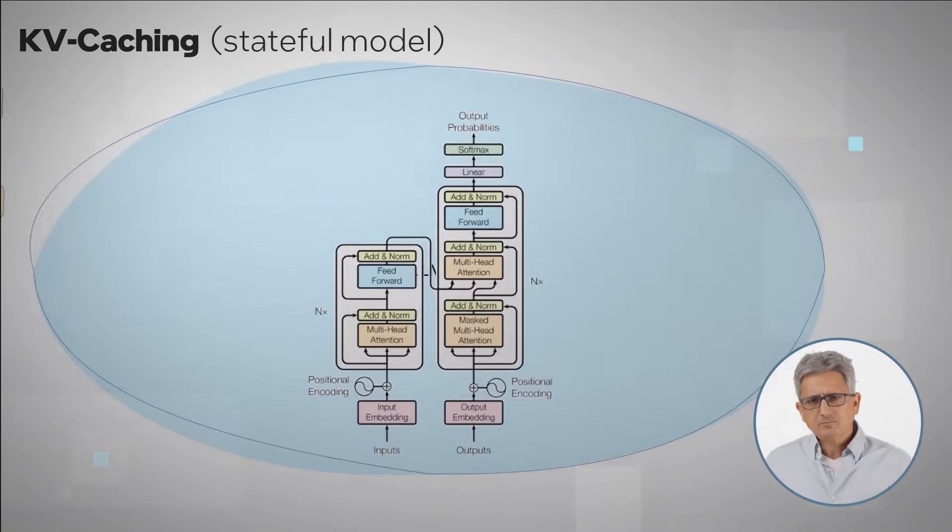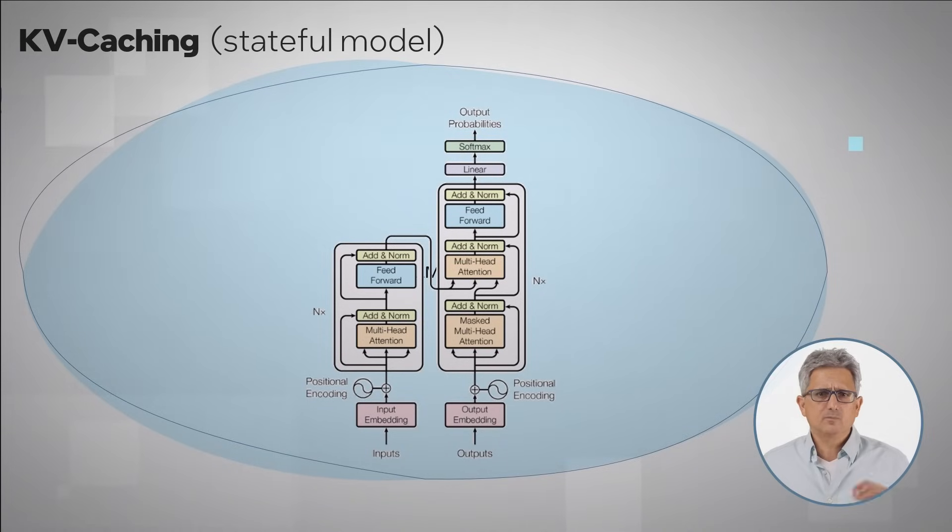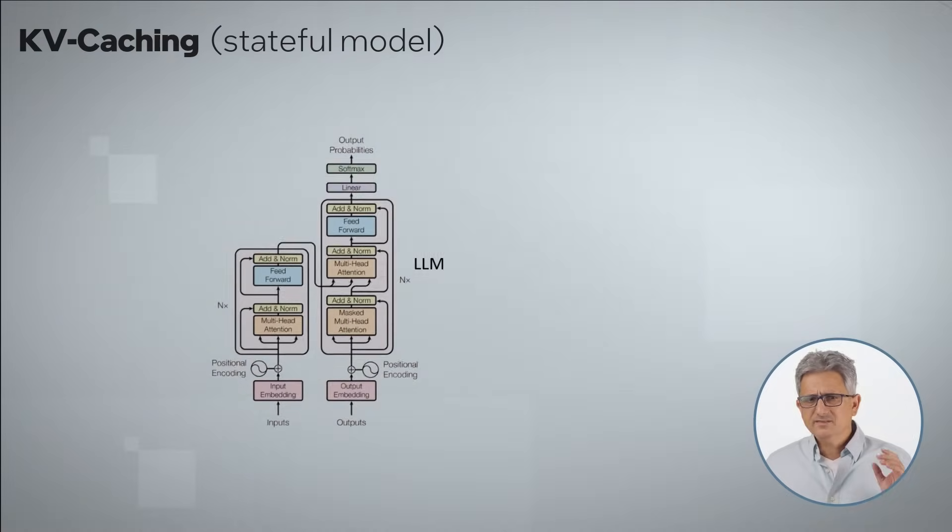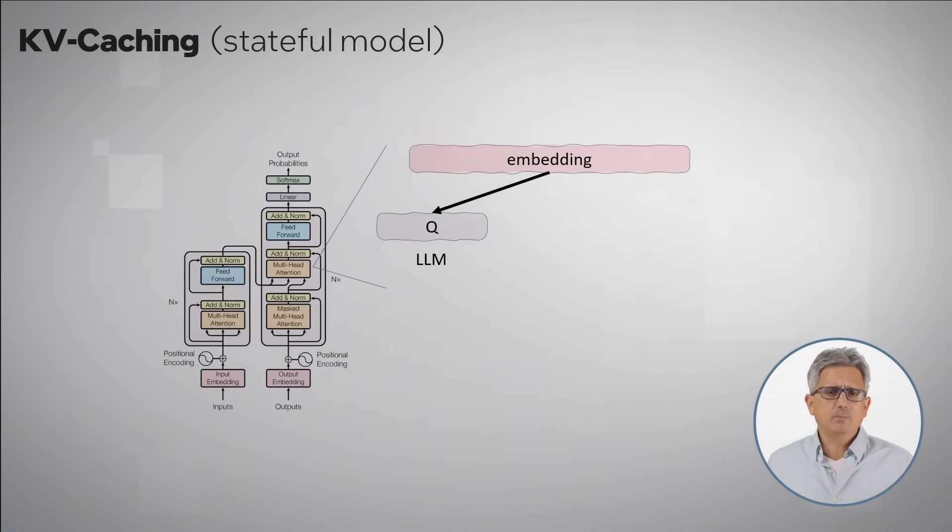If we look at the heart of the transformer based architecture and to the self-attention mechanism, each token corresponds to an embedding vector. The embedding vector is multiplied by a matrix to create the vector Q, query, that basically represents the input token that is currently being processed.